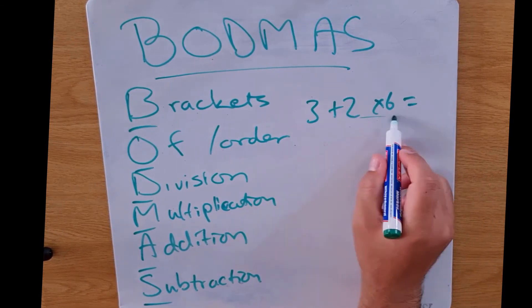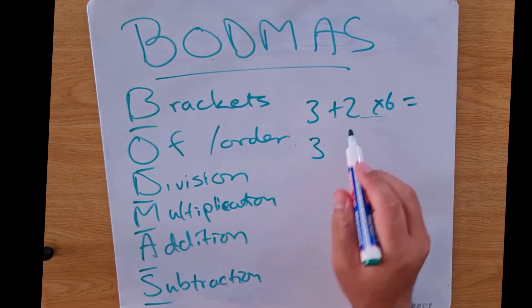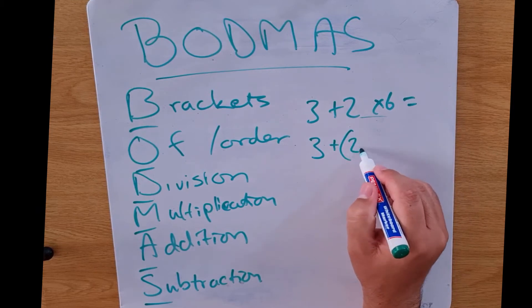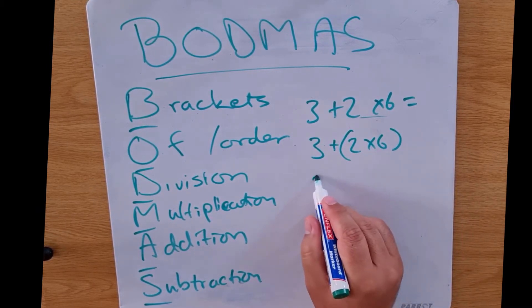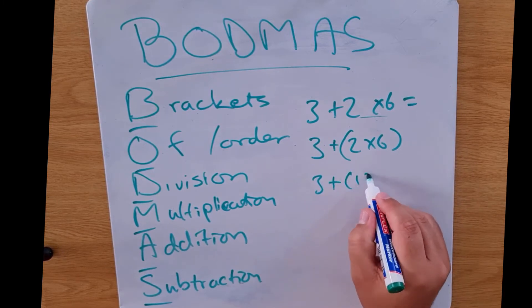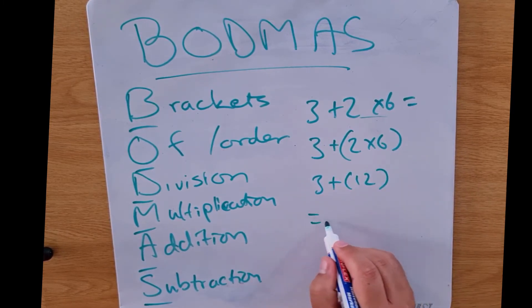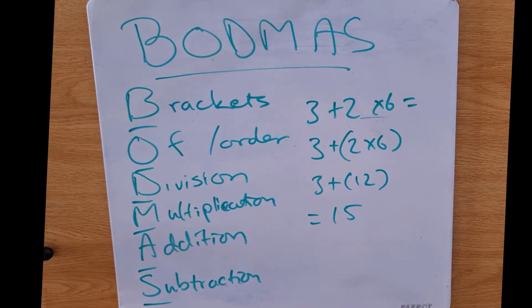Do multiplication first. So in essence this according to BODMAS will be 3 plus bracket 2 multiplied by 6. We know that answer is 12, so it'll be 3 plus 12 and that will give us our answer of 15.